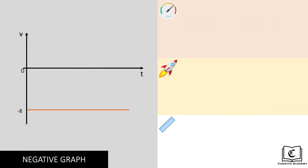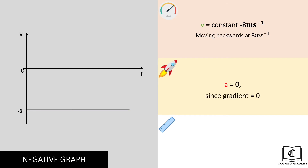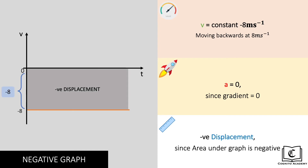Now to the final type of graphs — the negative graphs, where velocity gets negative. A negative velocity refers to velocity in the opposite direction of convention, or in layman terms, velocity pointing backwards, meaning the object is moving backwards. Here, our object is moving at a constant velocity of negative 8 meters per second, meaning the object is moving backwards at a constant 8 meters per second. Gradient and hence acceleration is zero. Displacement in this case is negative, since the area under the graph is negative — meaning the object is behind where it originally started.